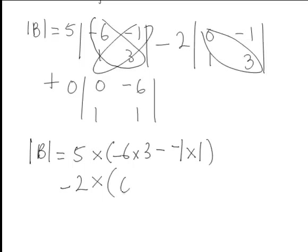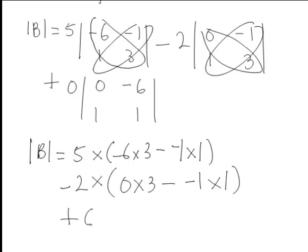For the second sub-determinant, that will be 0 times 3 minus negative 1 times 1. And the last term is 0 times the sub-determinant, so that last one will just disappear to 0.